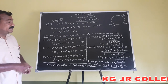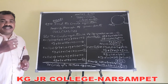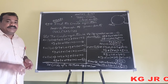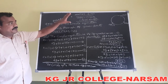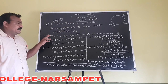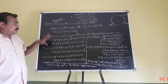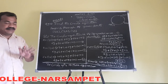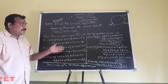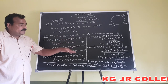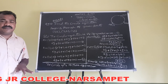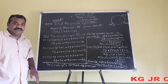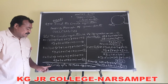So students, let me explain this process once again. To find the circle equation passing through three points: first, draw a rough diagram; second, write the circle equation in general form; third, substitute the given three points one by one to get three relations in terms of g, f, and c; then solve pairs of equations — (2,3) and (3,4) — to get the values of g, f, and c; finally, substitute all values into the general circle equation to get the required circle equation.